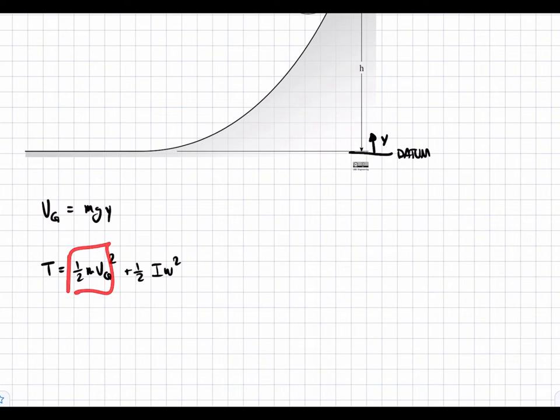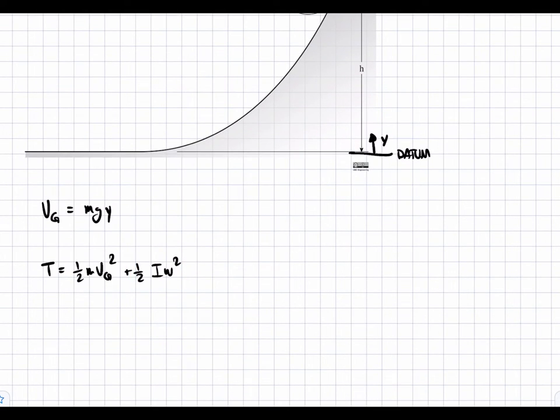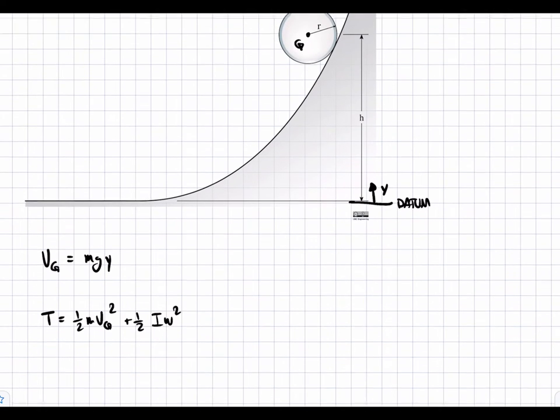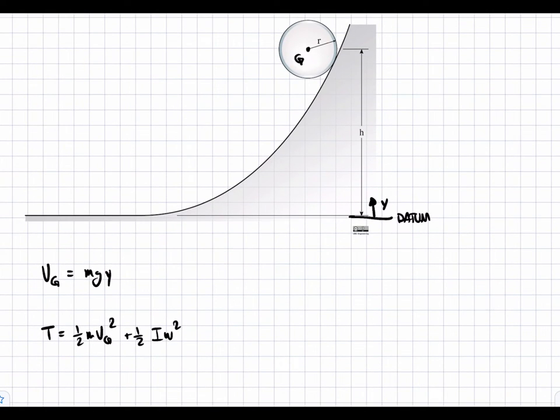We have a component due to the translation of the center of gravity and a component due to the rotation. We know vg. We need to find an expression for I omega squared in terms of vg, which we can do based on the geometry of the wheel.